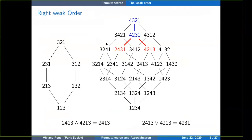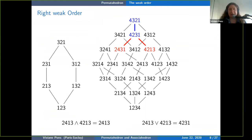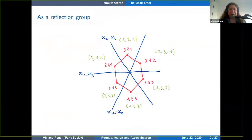Okay, we've seen that the weak order is a lattice. Now I'm going to go back to geometry. Another interesting property is that you can see the permutations as a reflection group, which gives you the geometry of the permutahedron. I'm looking at the projection onto the hyperplane where x1 + x2 + x3 = 6, and I've drawn three lines: x1 = x2, x1 = x3, and x2 = x3.